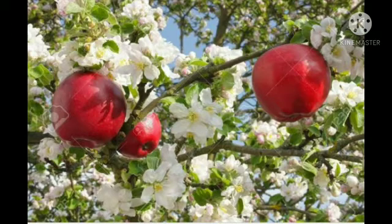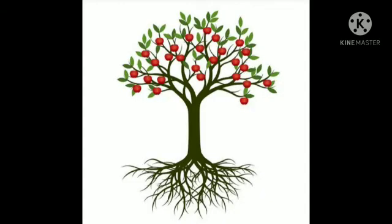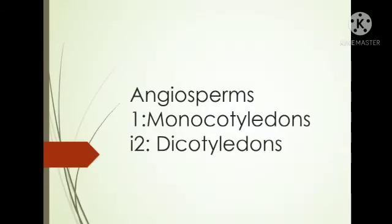The second class of seed-bearing plants are angiosperms. Angiosperms are seed-bearing flowering plants. They have seeds that are enclosed in fruits, and they have well-developed roots, stems, and leaves.